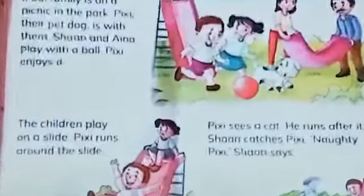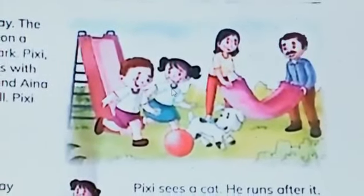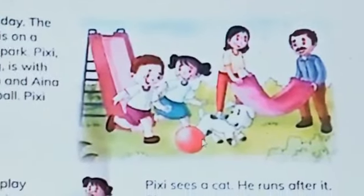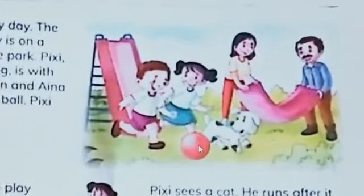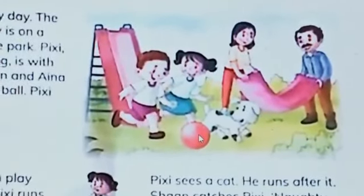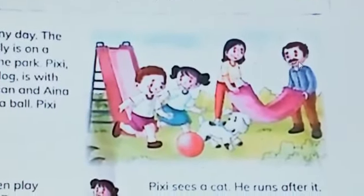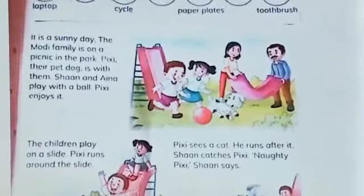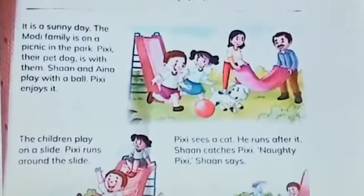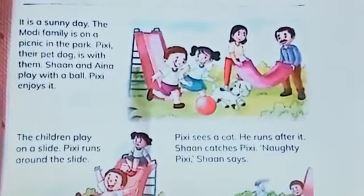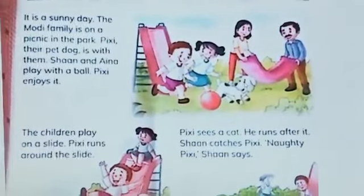Look at this picture. There are two children who are playing with the ball. The shape of the ball is round and the color of the ball is red. She is mom and he is dad. This is their pet dog, whose name is Pixie.